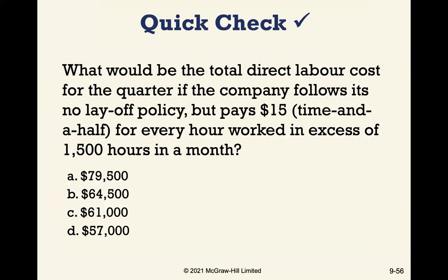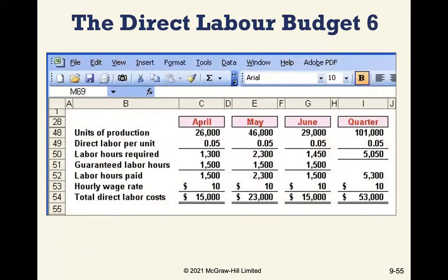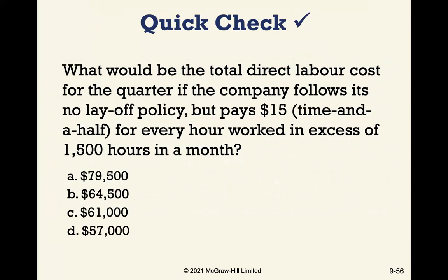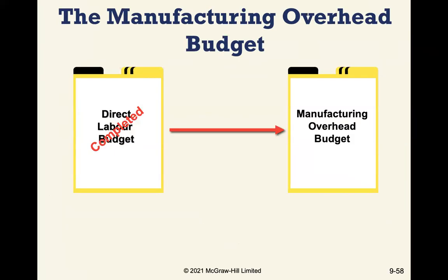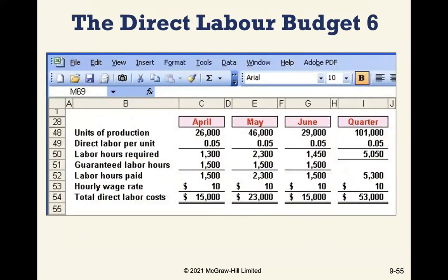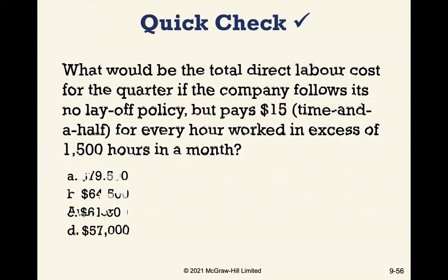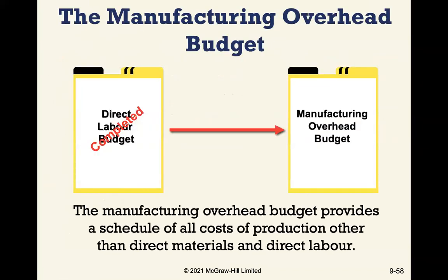If the company follows its no-layoff policy but pays $15 — time and a half — for every hour worked in excess of 1,500 hours in a month, then in May with approximately 2,300 hours, that's 800 hours at time and a half, adding $12,000 to labor costs. Once you have these processes in place, it's very easy to change variables and see how it affects estimates going forward.